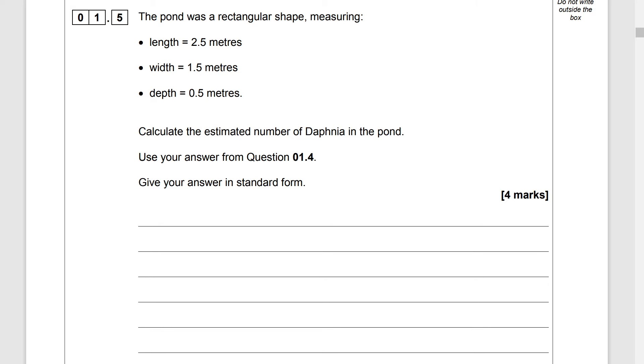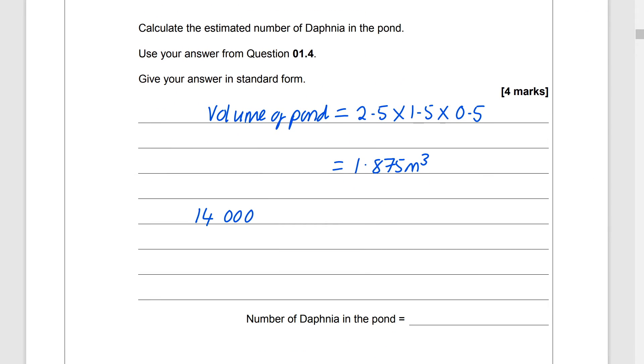Alright so actually what we're doing is we're working out the volume of the pond. So good old maths there. Length times width times depth and that is going to give us 1.875 metres cubed and we know that there are 14,000 Daphnia in one metres cubed from our previous answer. So all we've got to do is times 14,000 by 1.875 the volume of the pond and that gives us an answer of 26,250 and don't forget it asks for our answer in standard form which is 2.625 times 10 to the 4.